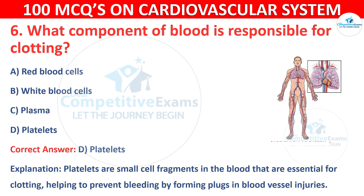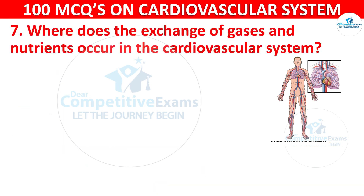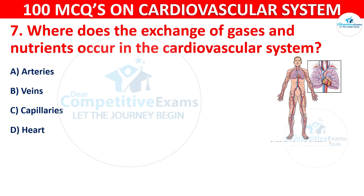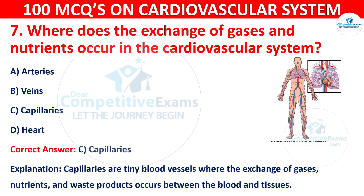Q7. Where does the exchange of gases and nutrients occur in the cardiovascular system? Options are: arteries, veins, capillaries, or heart. The correct answer is C — capillaries. Capillaries are tiny blood vessels where the exchange of gases, nutrients, and waste products occurs between the blood and tissues.